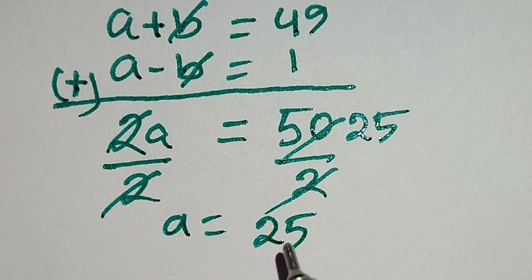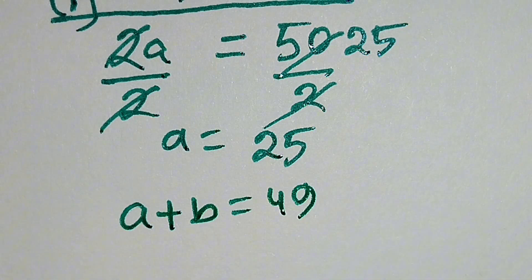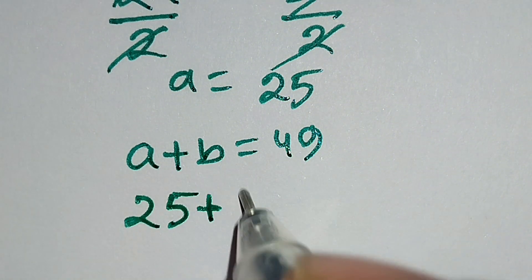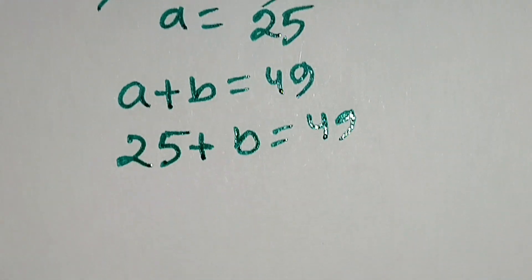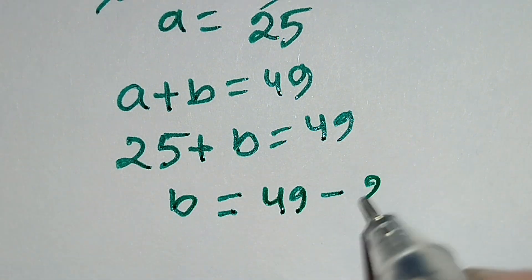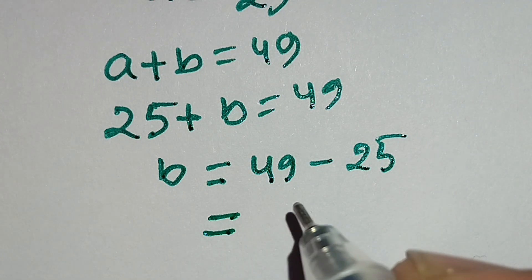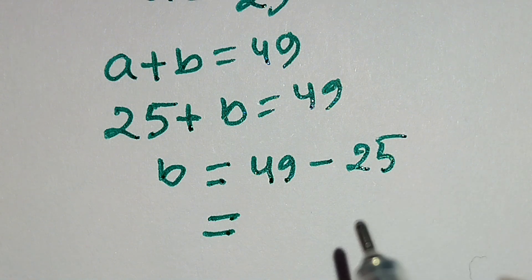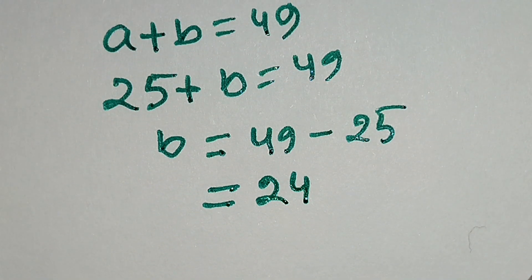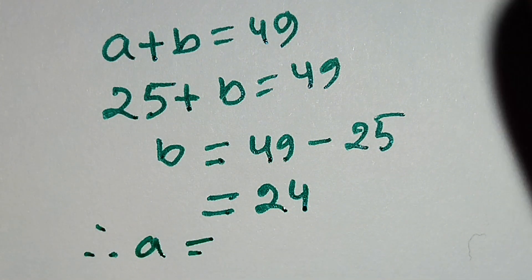Putting this value of a into the equation a plus b equals 49: since a equals 25, we get 25 plus b equals 49. Therefore b equals 49 minus 25, and 49 minus 25 equals 24. So a equals 25 and b equals 24.